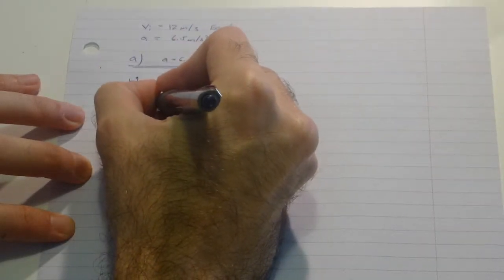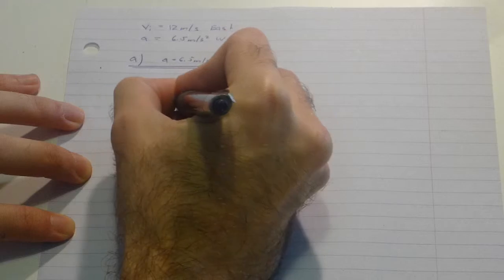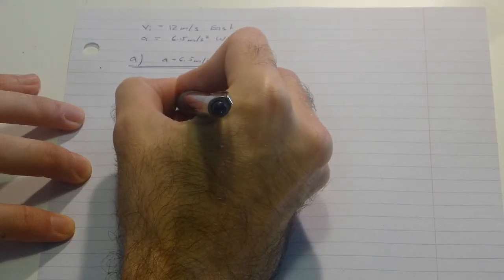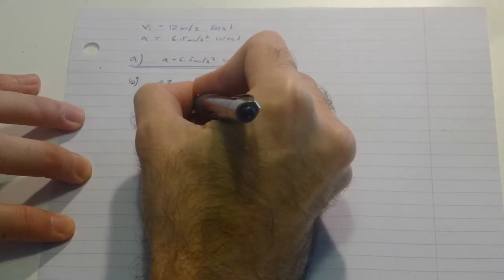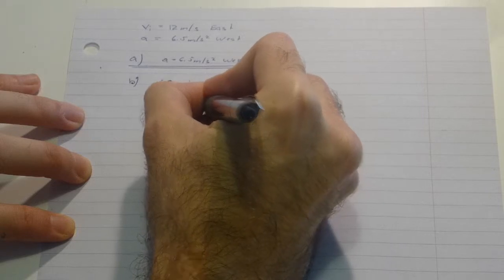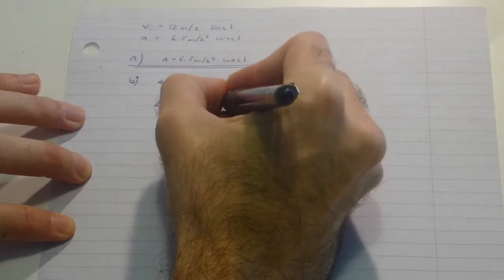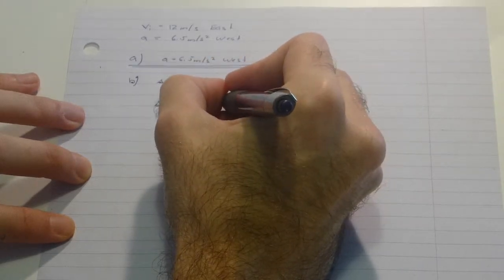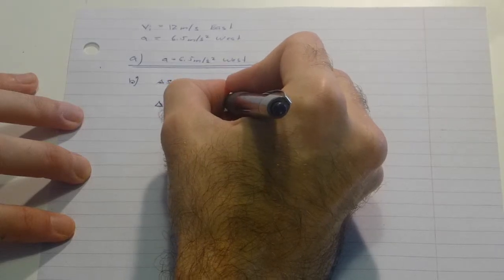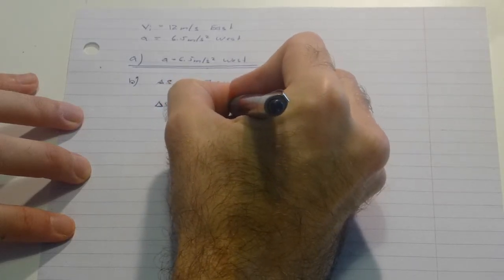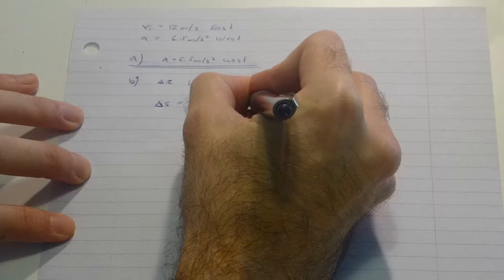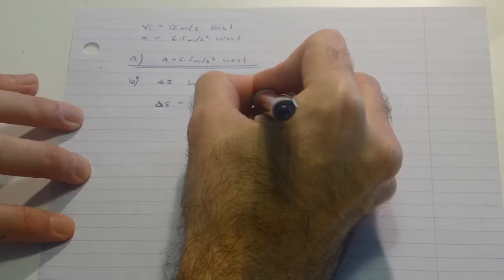Let's say we look up and we find the formula for change in displacement is V initial times time plus one half A t squared.